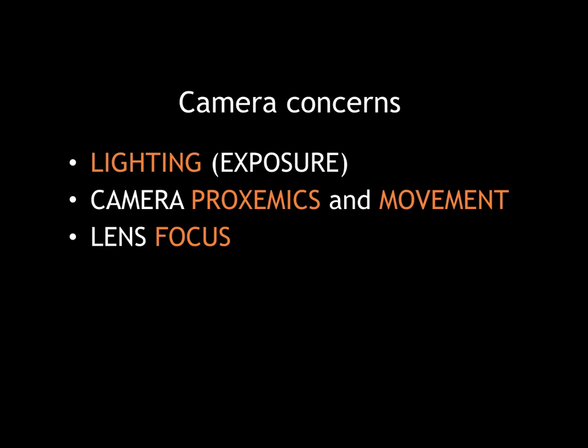This concludes the presentation. As a review, today we talked about lighting, camera movement, and lens — three different components that cinematographers are concerned with when telling a story. When watching a film known for its good cinematography, look for how the cinematographer is responsible for exposing an image with good lighting, moving the camera in interesting ways, or racking the focus of the lens back and forth to draw elements in the foreground and background to the viewer's attention.